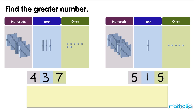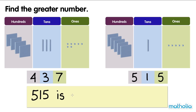To compare the numbers, we compare the digits in the hundreds place. Four is smaller than five. Five is greater than four. So, five hundred and fifteen is greater than four hundred and thirty-seven.